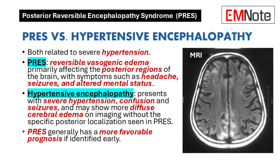In contrast, hypertensive encephalopathy presents with acute brain dysfunction due to severely elevated blood pressure, leading to symptoms like confusion and seizures, and may show more diffuse cerebral edema on imaging without the specific posterior localization seen in PRES. While both conditions require prompt treatment to prevent lasting damage, PRES generally has a more favorable prognosis if identified early.